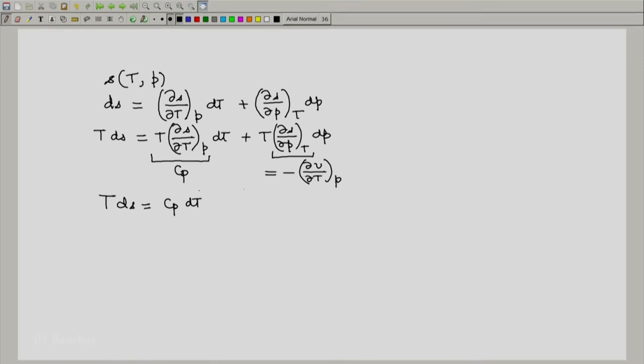...we will get our first TDS relation which is Cp DT minus T into partial of V with respect to T at constant P dP. This is the first TDS relation.